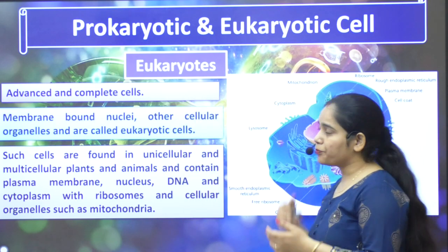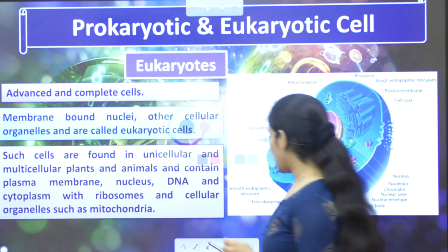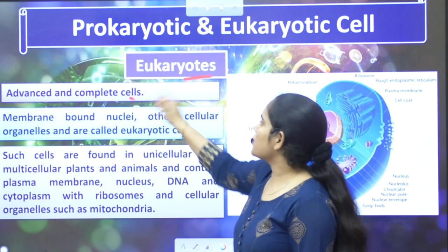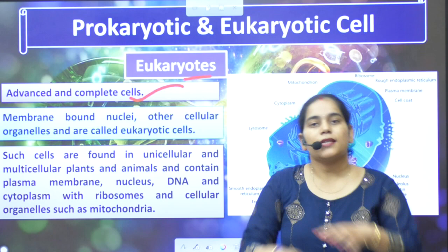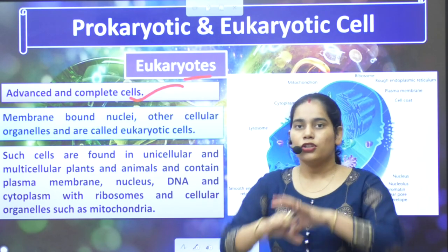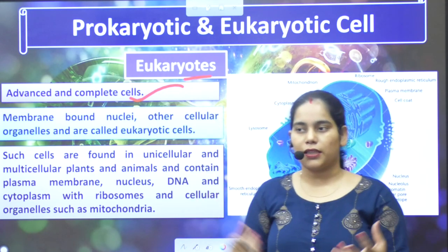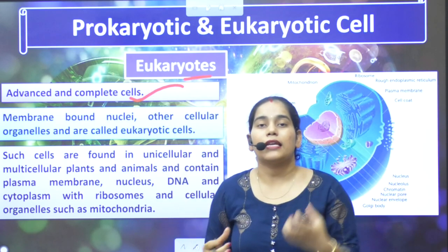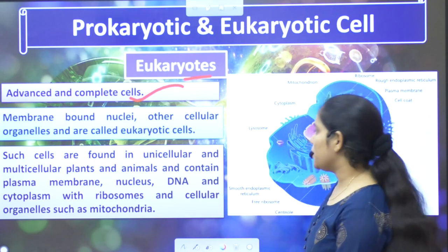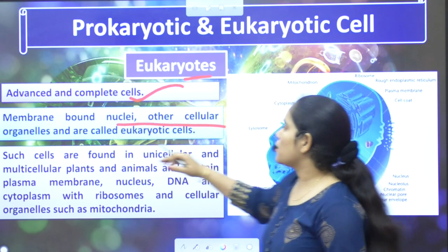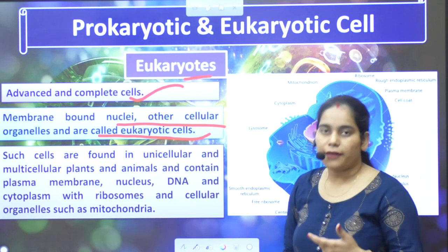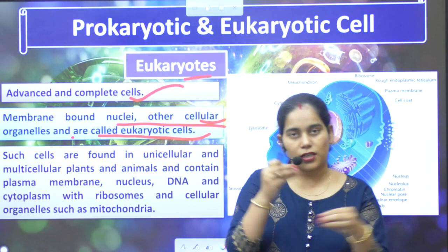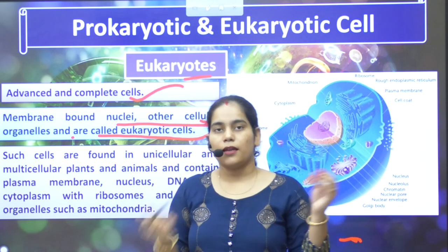Now if we talk about eukaryotes — as many plants, animals, or other small organisms as there are, all these are eukaryotic cells. They are advanced and complete cells. They have a lot of organelles with a complete structure, meaning any requirement of the cell they fulfill. Like they have mitochondria, DNA, and other things fulfilling a cell's need. Membrane-bound nuclei and other cellular organelles are present in eukaryotic cells.